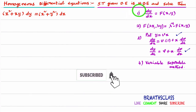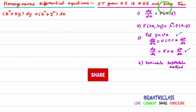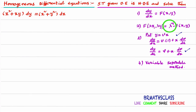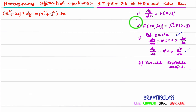What is step 1? Whatever the given differential equation, we will write it in the form dy/dx = f(x, y). After writing the given differential equation into this form, we will calculate f(λx, λy). If we are able to express f(λx, λy) in the form of λⁿ · f(x, y), then we say that the given differential equation is a homogeneous differential equation.